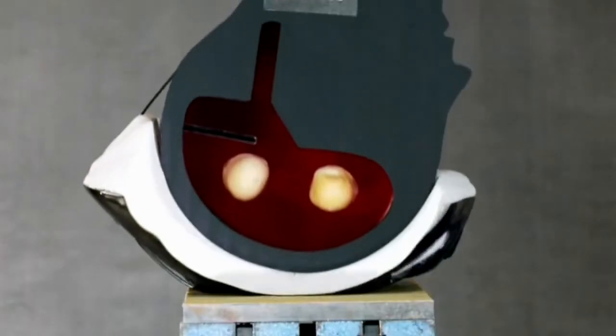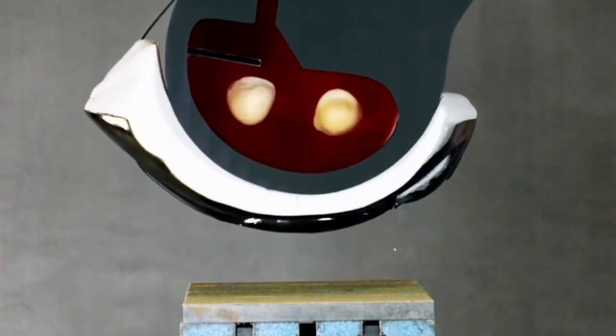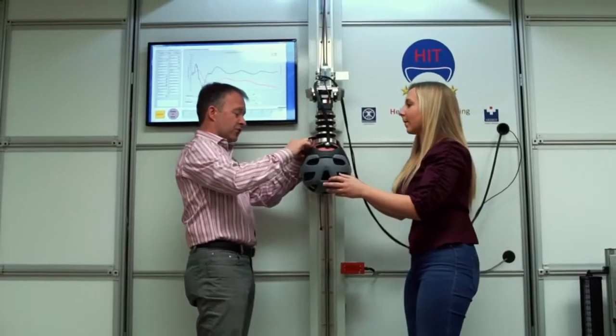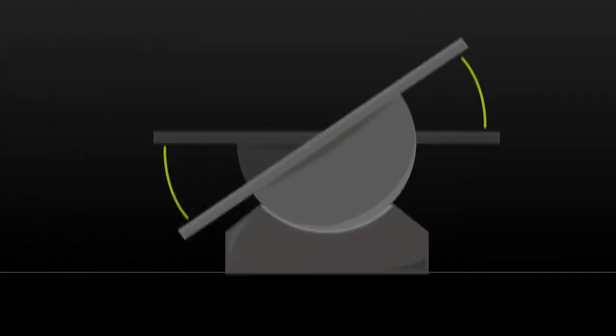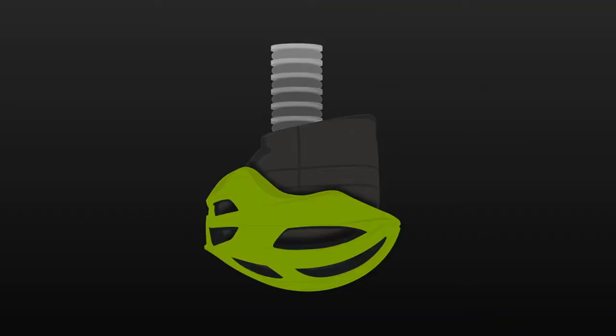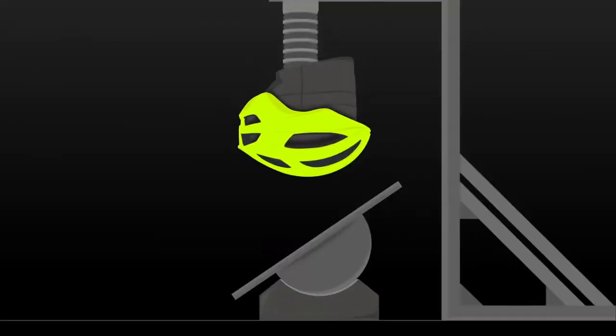There's a number of testing standards that exist for helmets already. They're all linear drop tests. The simulated head is dropped straight down on a flat surface and it's rigidly mounted that the head cannot rotate. So we need to modify that impact tester to allow for a more realistic impact, meaning oblique. And then we added a neck surrogate to it, so now the head can rotate during impact.